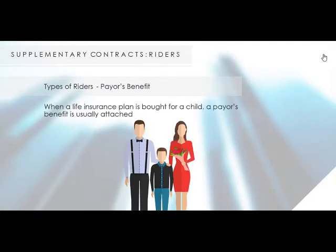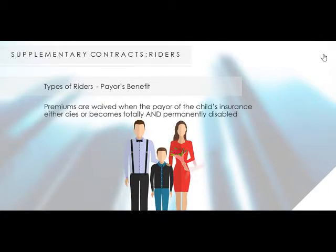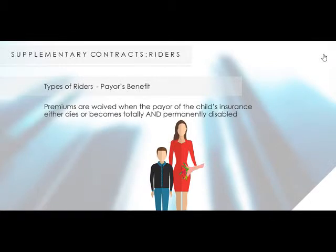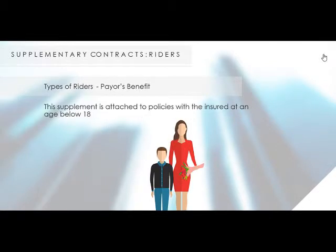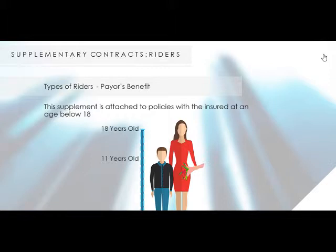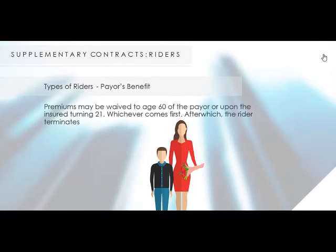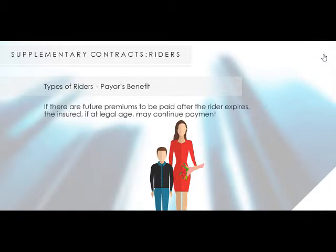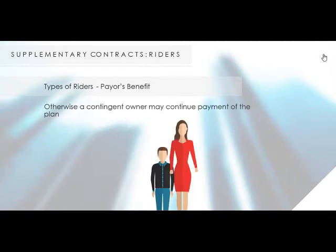Types of Riders: The Payer's Benefit. When a life insurance plan is bought for a child, a payer's benefit is usually attached. Premiums are waived when the payer of the child's insurance either dies or becomes totally and permanently disabled. This supplement is attached to policies with the insured at an age below 18, to ensure their plans continue even with the demise of their payer. However, premiums may be waived at age 60 of the payer or upon the insured turning 21, whichever comes first, after which the rider terminates. If there are future premiums to be paid after the rider expires, the insured, if at legal age, may continue payment. Otherwise, a contingent owner may continue payment of the plan.